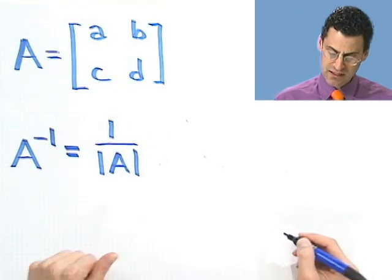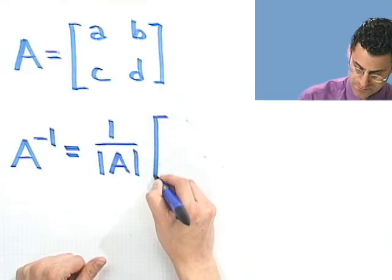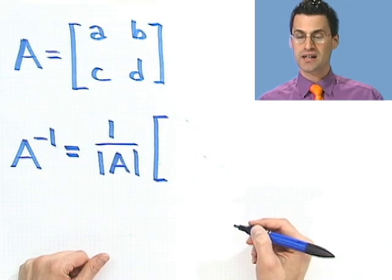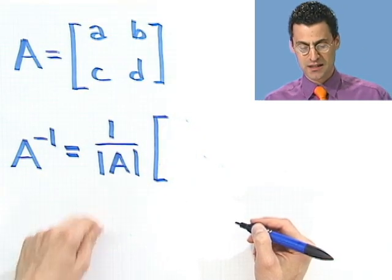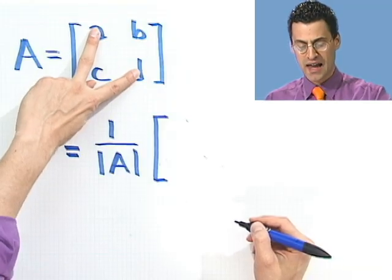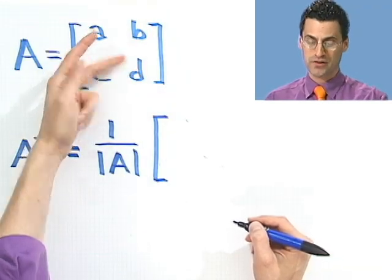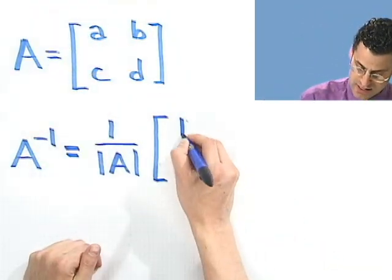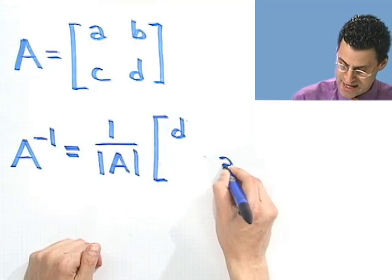OK, and then you scale or multiply that by the following new matrix. It's still going to be a 2 by 2, of course. And what's the recipe? The recipe is, you take this diagonal here, and you switch them. So I just switch the roles of these things. So I put a D here, and then I put an A here.